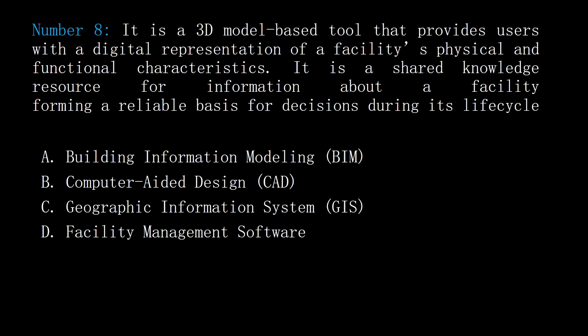Number 8. It is a 3D model-based tool that provides users with a digital representation of a facility's physical and functional characteristics. It is a shared knowledge resource for information about a facility, forming a reliable basis for decisions during its lifecycle. A: Building Information Modeling (BIM). B: Computer Aided Design (CAD). C: Geographic Information System (GIS). D: facility management software. Answer: A, Building Information Modeling (BIM).